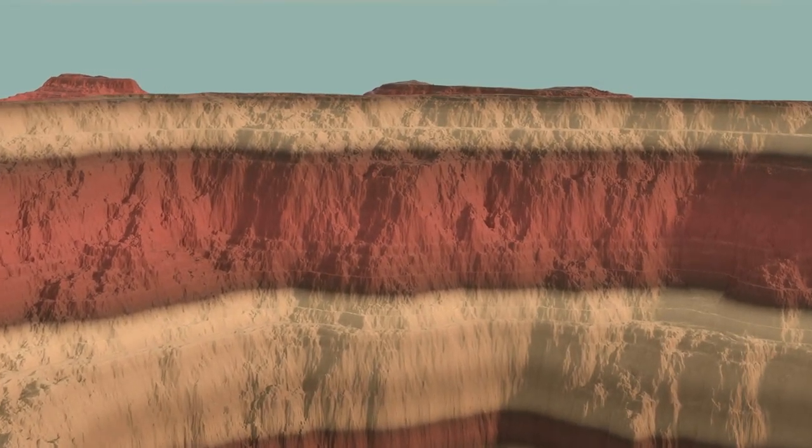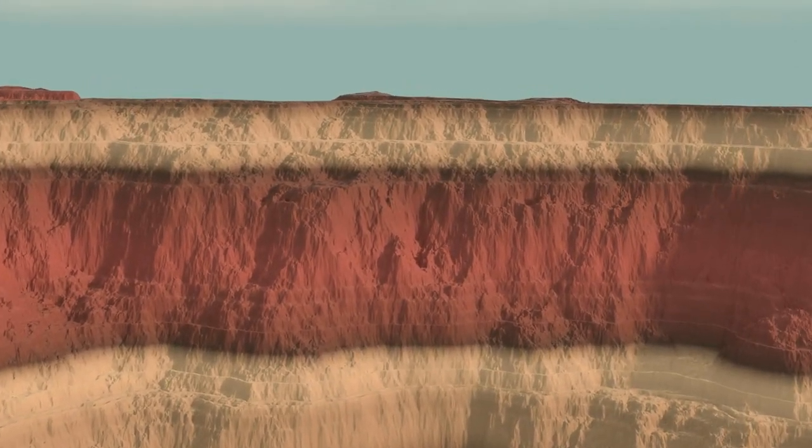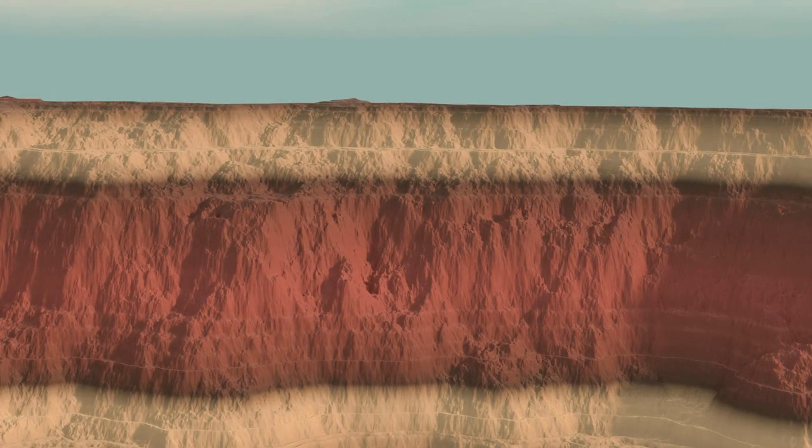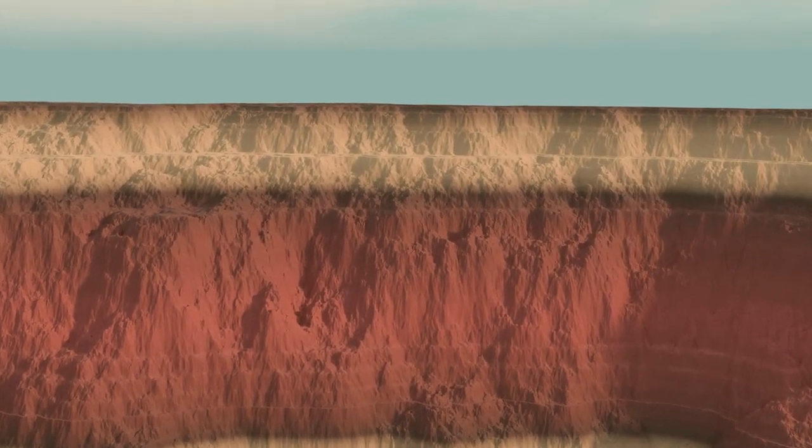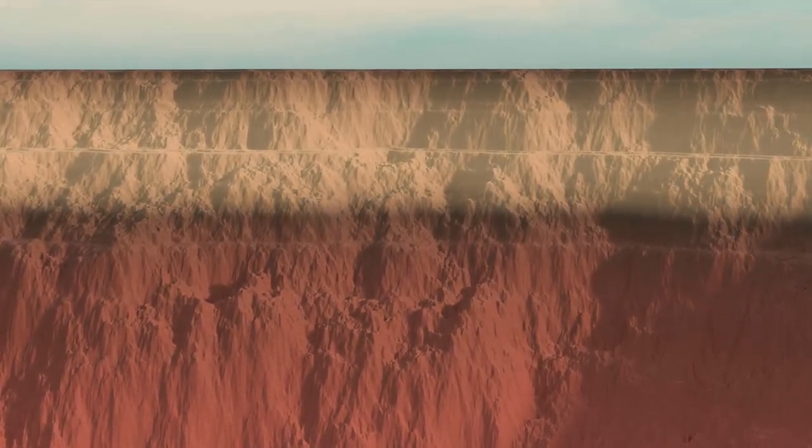This is strata. Layers of rocks that contain the geological history of a planet. Locked inside these layers are the atmosphere, soil, and biological materials of the past.